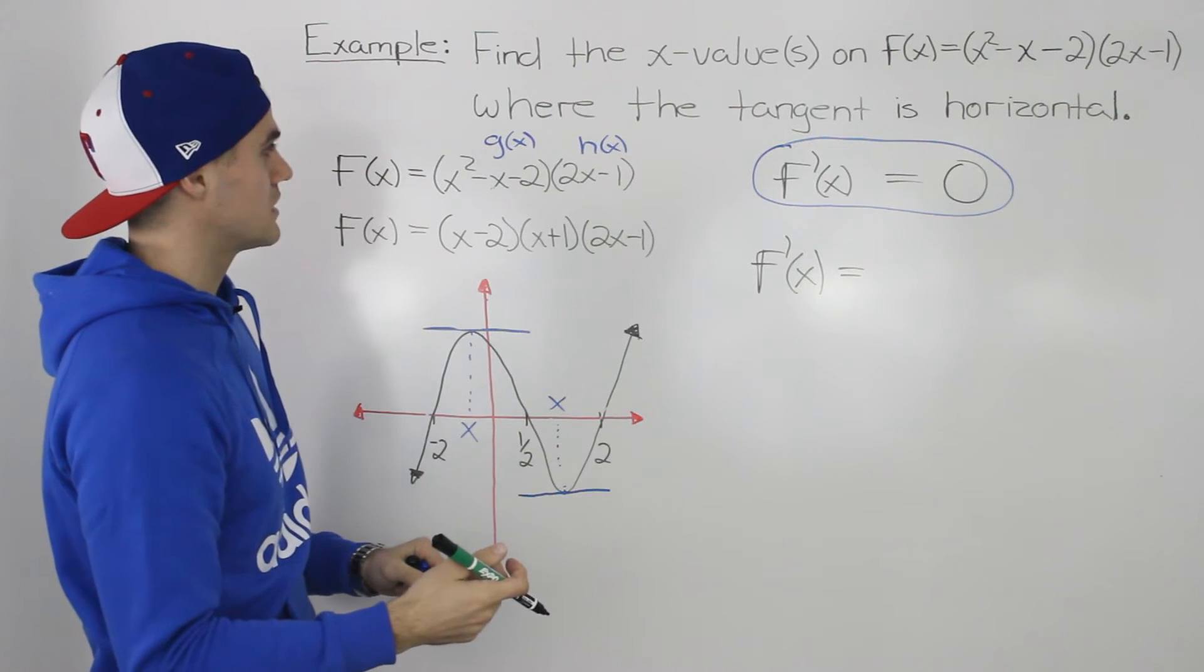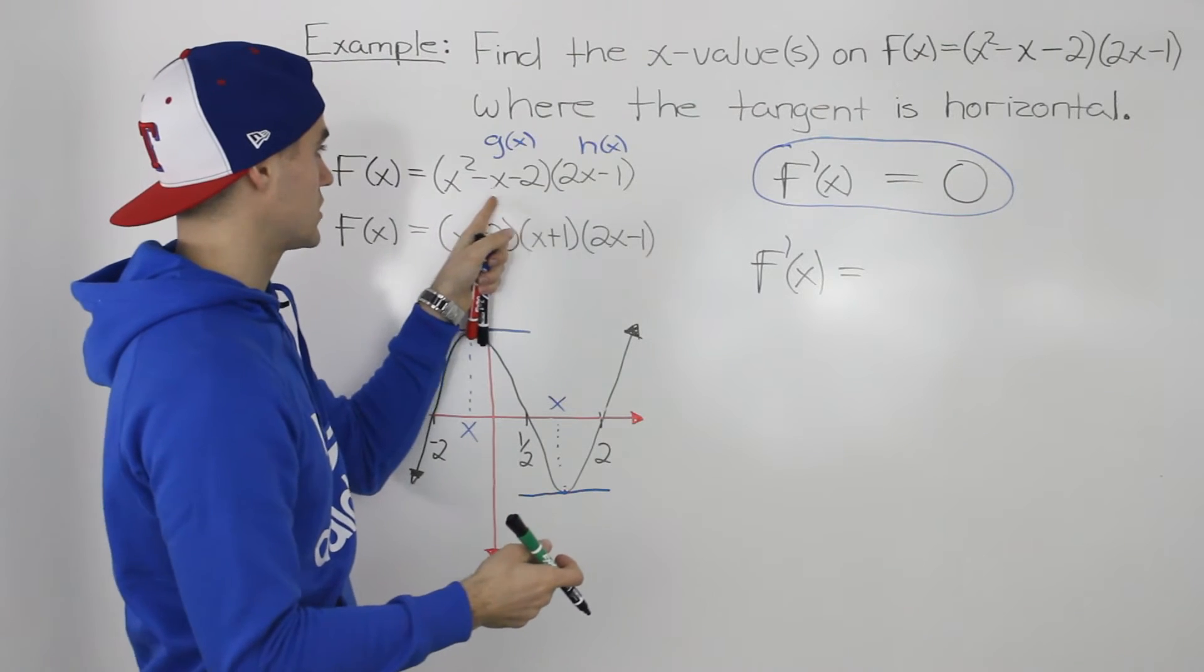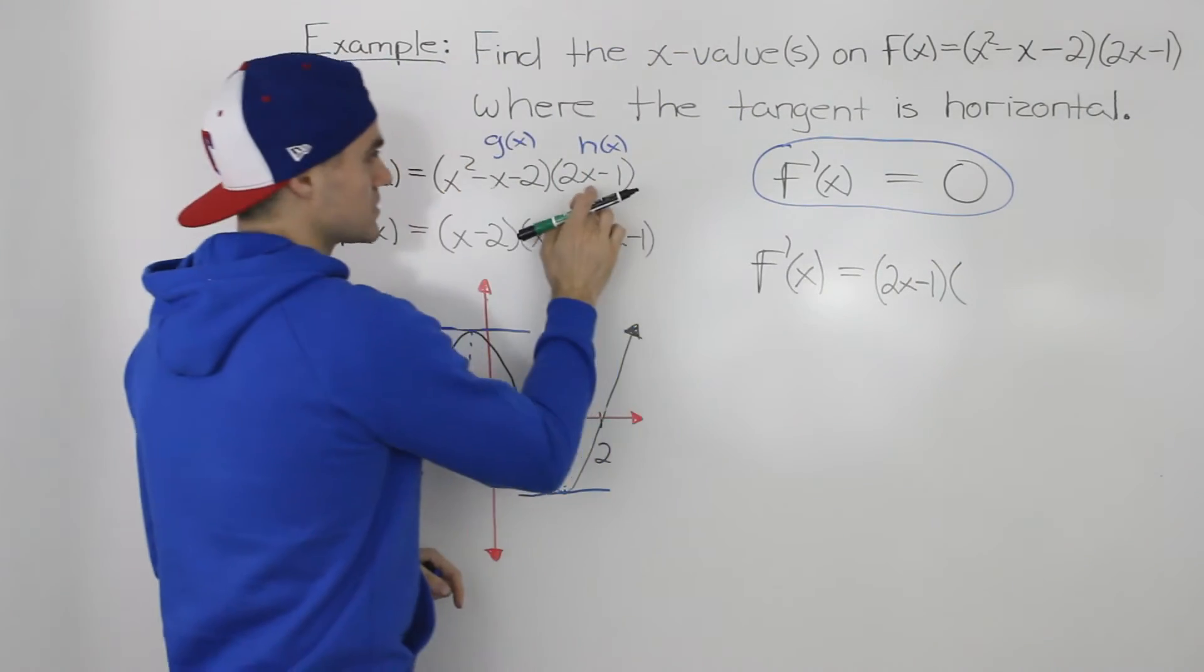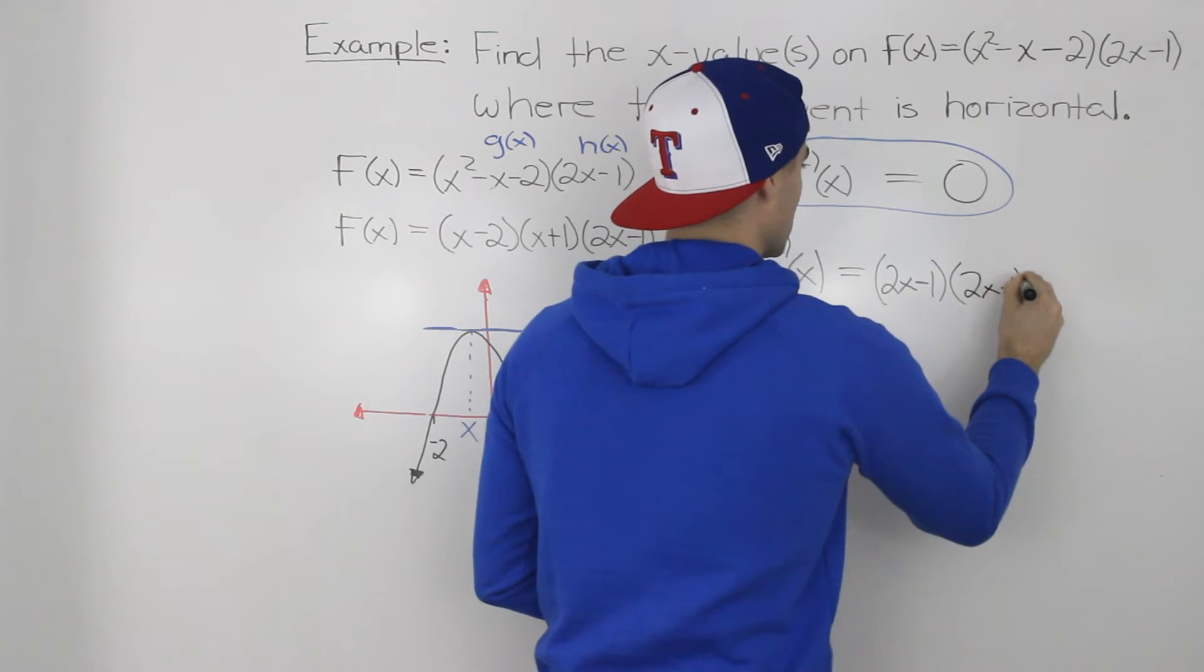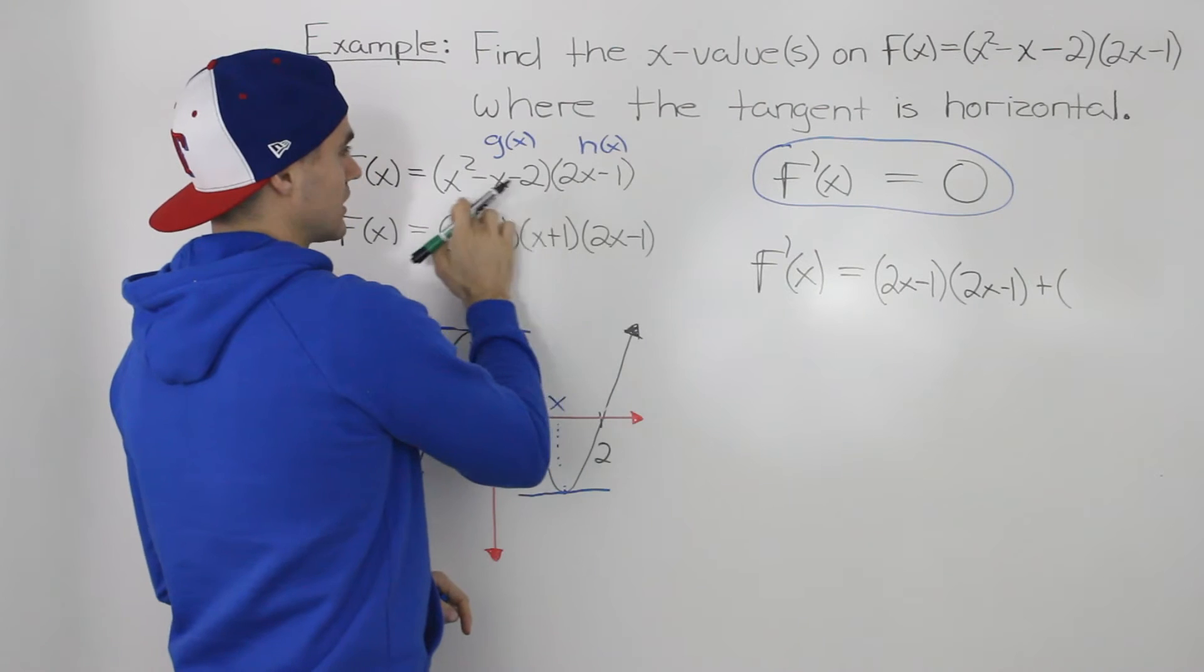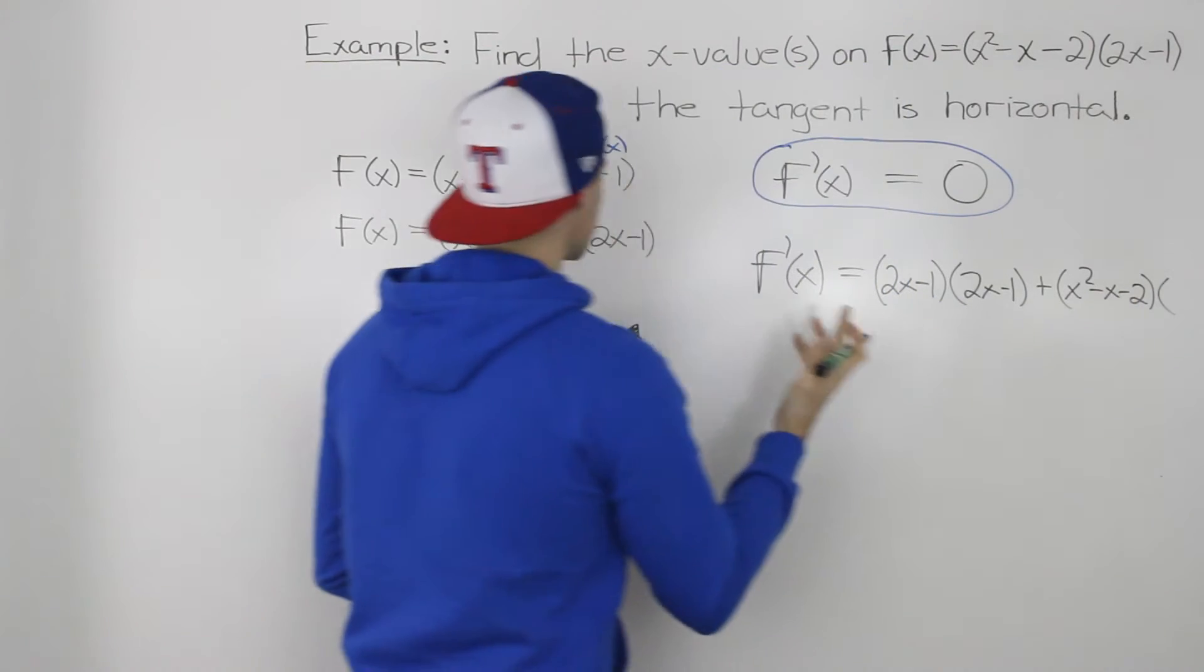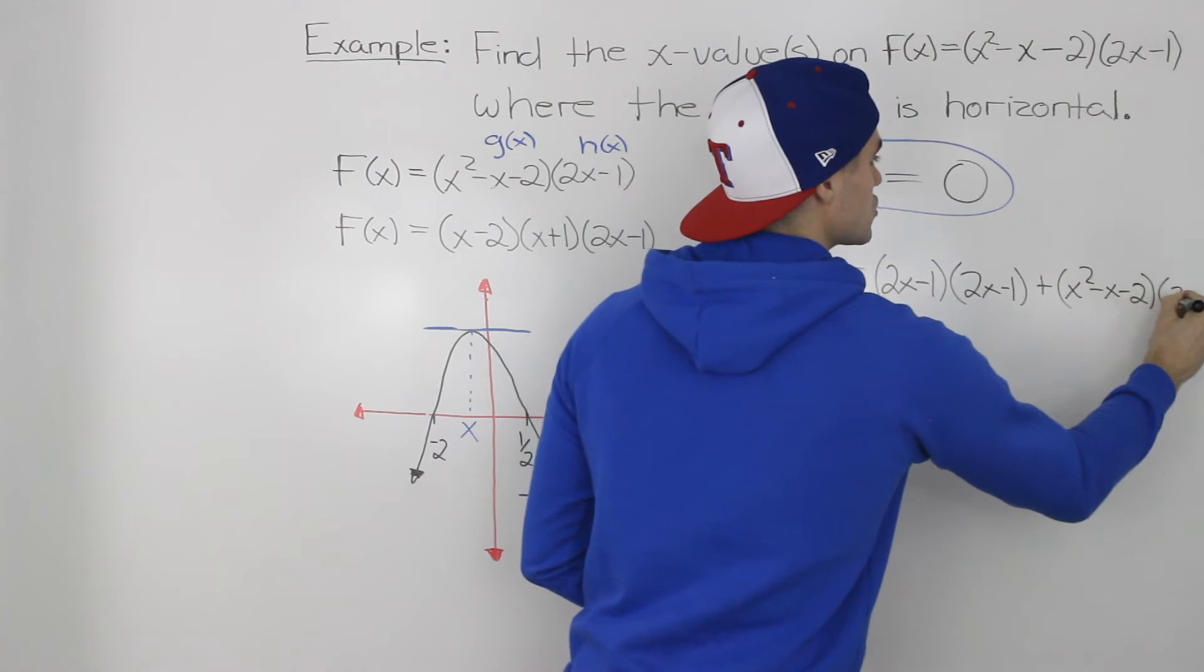So to find the derivative using the product rule, we would take the derivative of that first function. So the derivative of that first bracket is 2x minus 1 times the second function left as it is. So that is 2x minus 1 as well. Plus the first function left as it is, so we got x squared minus x minus 2, times the derivative of that second function h prime x which would just be 2.